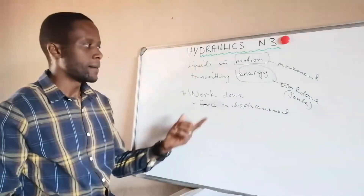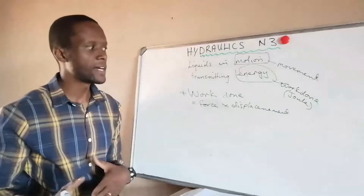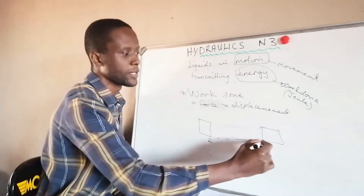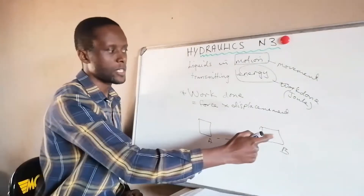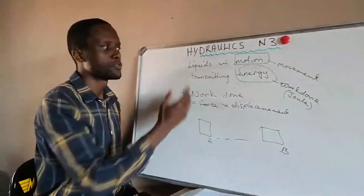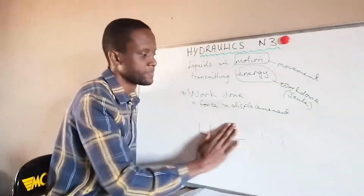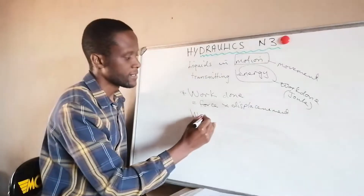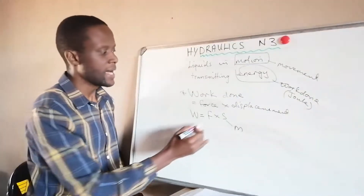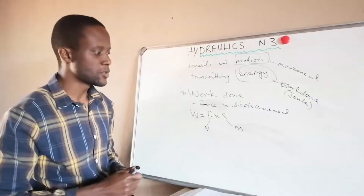Displacement is basically a liquid moving from one point to another. Whenever a liquid moves from one point to the other, there is displacement and therefore work has been done — just as when we move an object from point A to point B. In hydraulics, work done is force times displacement: W = F × s. Make sure displacement is always in meters and force always in newtons.